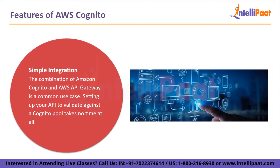Next up we have simple integration. The combination of Amazon Cognito and AWS API Gateway is a common use case. Setting up your API to validate against a Cognito pool takes no time at all. This validation occurs even before your API forwards the call to the next function, which helps to reduce the cost of having to validate sessions. This makes securing your endpoints a piece of cake.